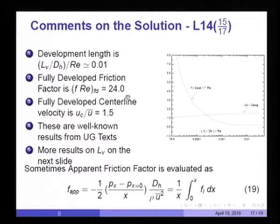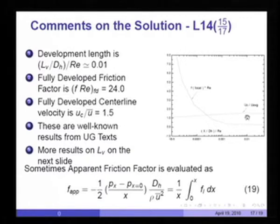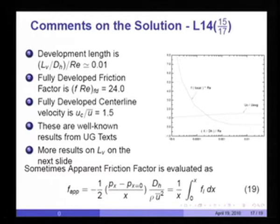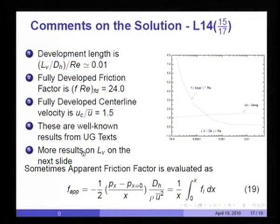The variation of friction factor versus x* starts from a high value and decreases to a constant of 24 at approximately x* = 0.01. The centerline velocity goes from 1 and ends up at 1.5. Fully developed friction factor times Reynolds number is 24 and fully developed centerline velocity u_c/u-bar is 1.5. We can treat L_v/(d_h · Re) ≈ 0.01 as a good estimate of the flow development length, which was our objective. The behavior near full developedness is very asymptotic, so one cannot fix precisely the development length.